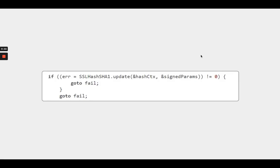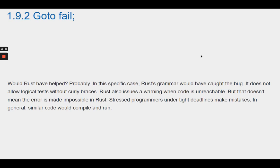In the example code, the issue lies between lines 15 and 17. In C, logical tests do not require curly braces. Would Rust have helped? Probably. In this specific case, Rust's grammar would have caught the bug. It does not allow logical tests without curly braces. Rust also issues a warning when code is unreachable. But that doesn't mean the error is made impossible in Rust. Stressed programmers under tight deadlines make mistakes. In general, similar code would compile and run.